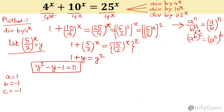One more important point: y will always be positive. See, this is y — it will always be positive. Because the exponent — whether x is positive, negative, or 0 — (5 over 2) raised to any power will always be positive. It cannot be negative.